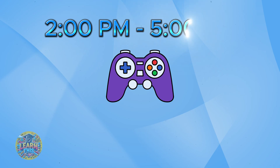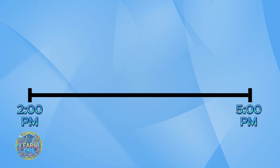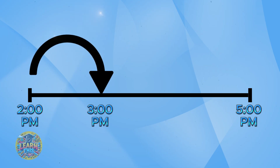Let's say you start playing a video game at 2 p.m. and stop at 5 p.m. How much time has passed? Draw a number line and mark the starting time on the left as 2 p.m. Mark the ending time 5 p.m. Now use arrows to count forward by hours. We'll go from 2 o'clock to 3 o'clock — that's one hour. Make sure you write one hour above it to keep track with each arrow.